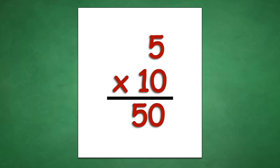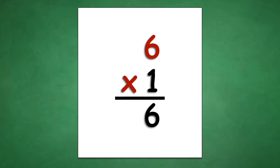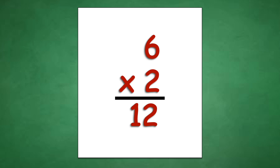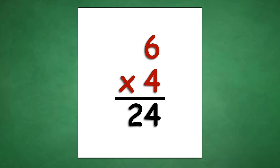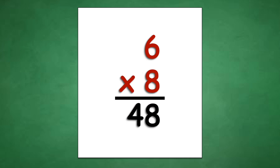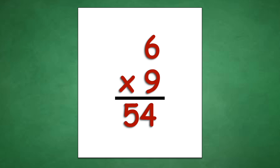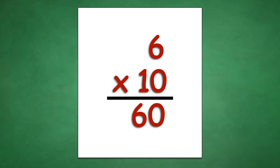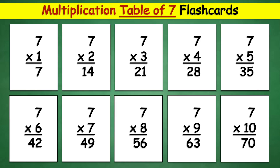Table of 6: 6 times 1 equals 6, 6 times 2 equals 12, 6 times 3 equals 18, 6 times 4 equals 24, 6 times 5 equals 30, 6 times 6 equals 36, 6 times 7 equals 42, 6 times 8 equals 48, 6 times 9 equals 54, 6 times 10 equals 60.